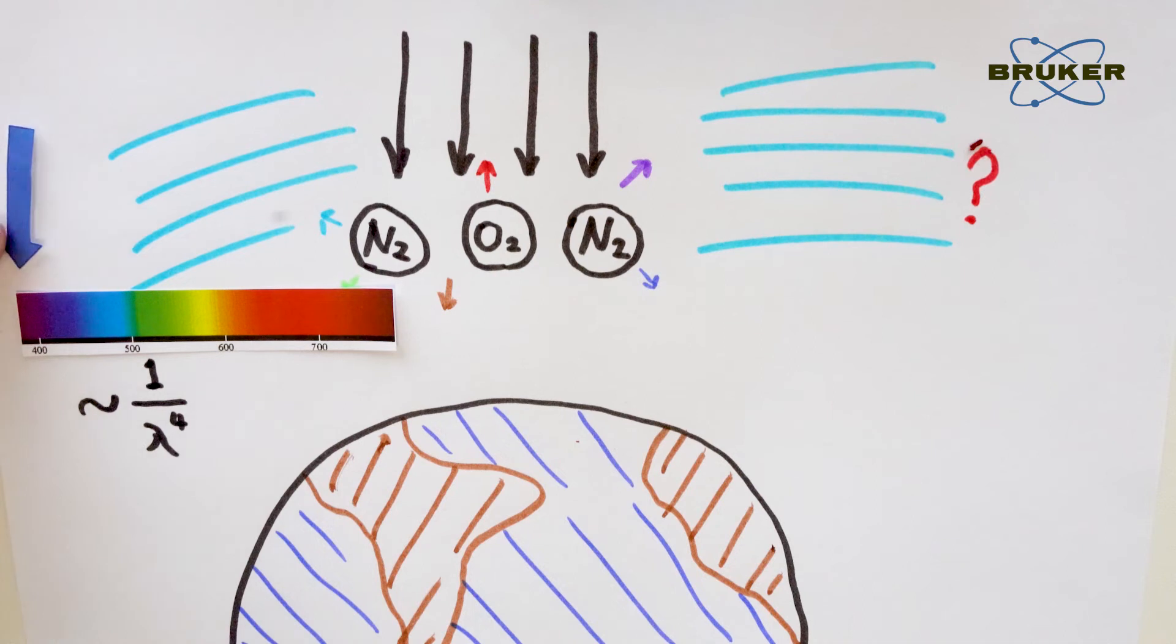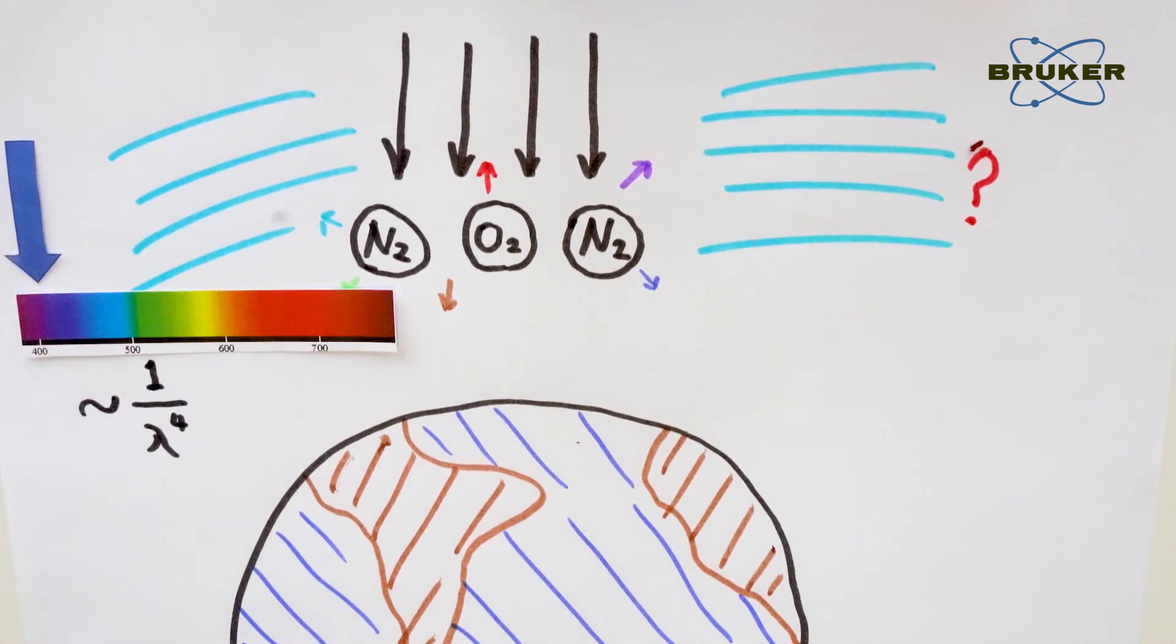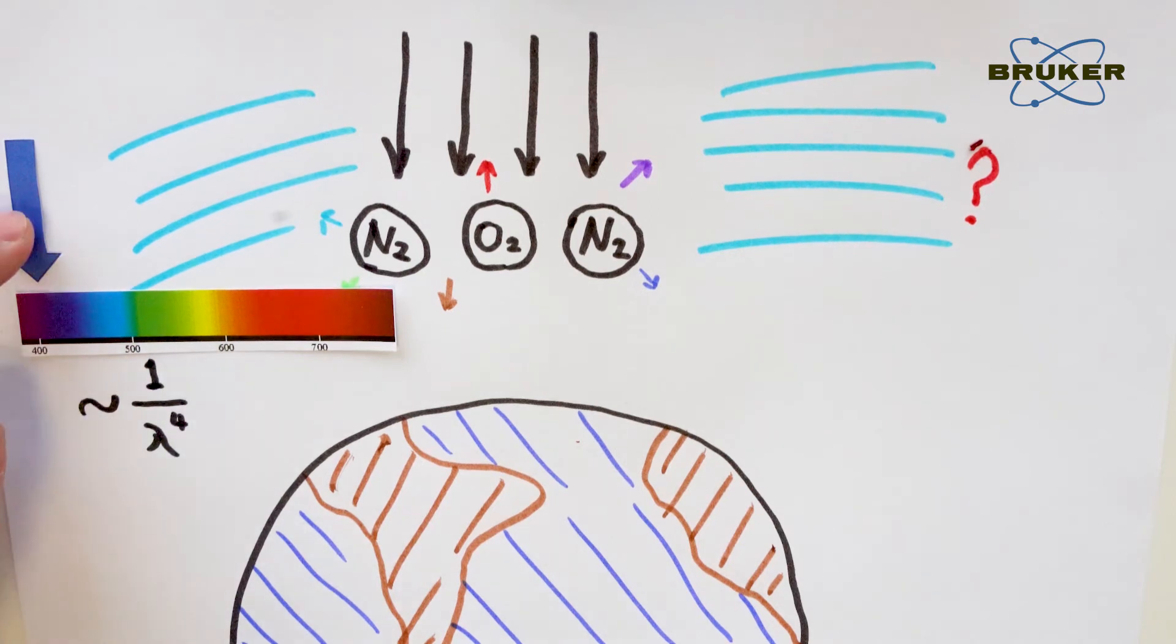For what we can see with our bare eyes, violet has the shortest wavelengths followed by blue. But our eyes are more sensitive to blue.